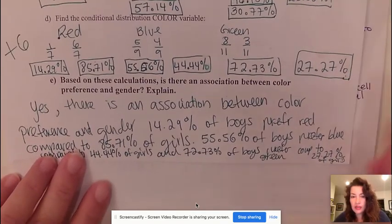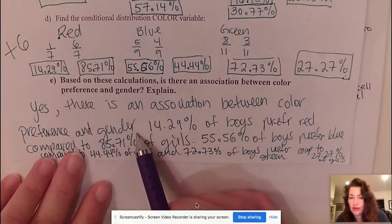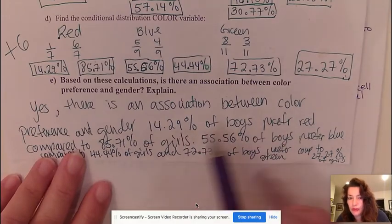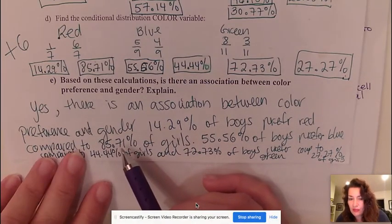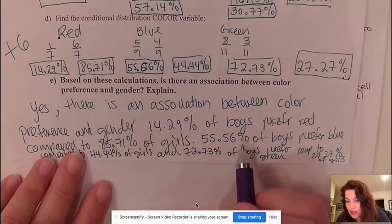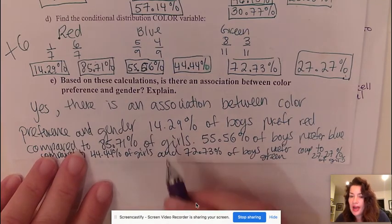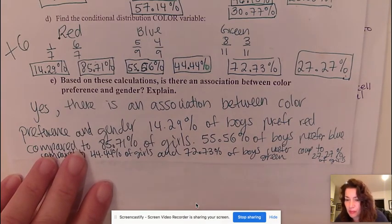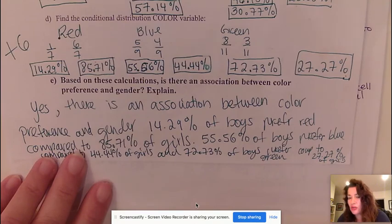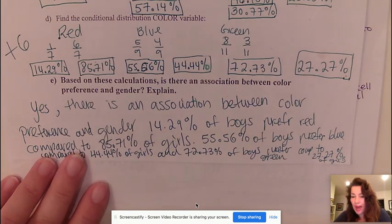So an example you could say is something like this: Yes there is an association between color preference and gender, and 72.73% of boys prefer green compared to 27.27% of girls. So that is just one example how you can answer the question of is there an association between the colors. So again you always want to state the problem in context and you want to use statistics to back it up.